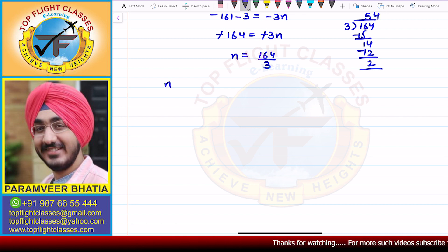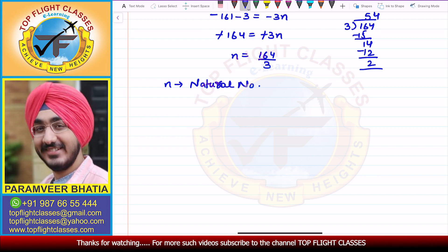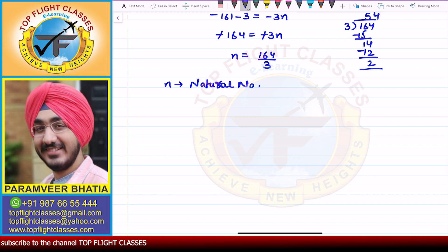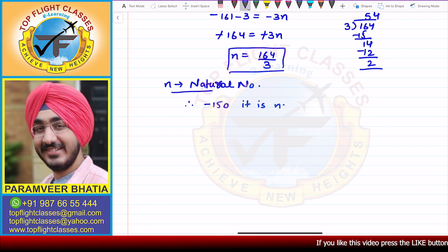Now, N is a natural number — the number of terms must be a natural number. There cannot be 0 terms, minus 1 terms, or fractional terms like a half or one-third. There will always be 1, 2, 3, 4 terms and so on. So since N is a fraction in this case, therefore minus 150 is not a term of the AP.